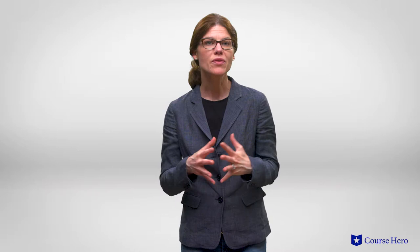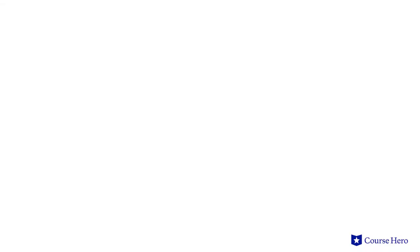In some kinds of active transport, specific carrier proteins undergo phosphorylation by ATP hydrolysis. When the carrier protein binds its target, the ATP transfers a phosphate to the carrier protein, changing the shape of the carrier protein. The changed shape gives the target molecule access to the other side of the membrane, and the target molecule is then released. This is a general mechanism used to transport many amino acids and ions across the membrane.